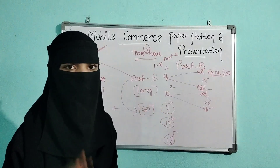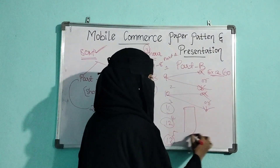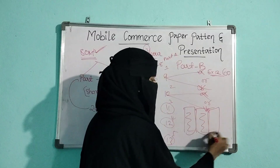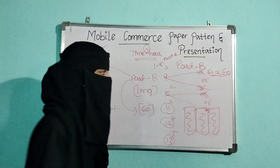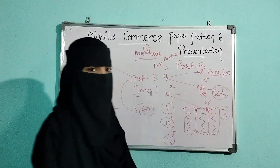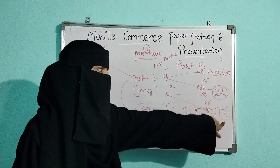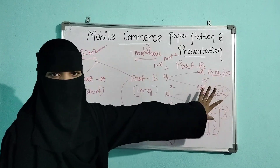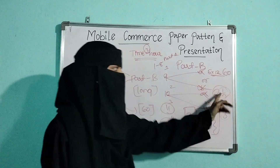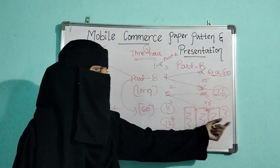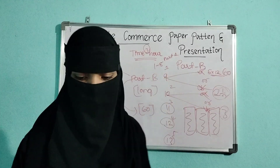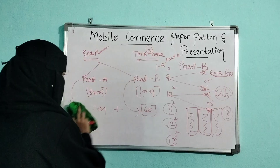To score 12 marks in Part B, you need to write three sides of paper per question. If not three sides, then at least two and a half sides, but your target should be three sides. Students who feel they cannot write three sides can go with two and a half sides, but aiming for three sides will help you score 12 marks for each question.